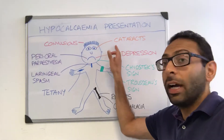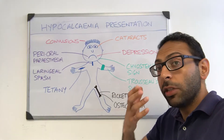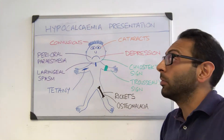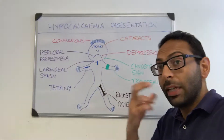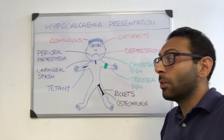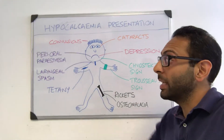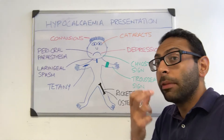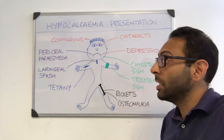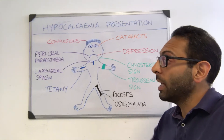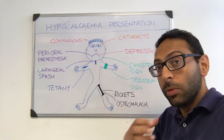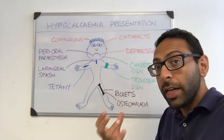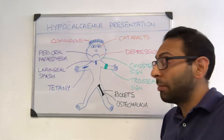First let's look at eyes — cataracts. You can get blurring of vision over time with low calcium levels. Convulsions can be a first presentation of a low calcium level. You may get tingling around the mouth, perioral paresthesia, that might be the first time they come and see you about that. You can get laryngeal spasm, which can lead to problems with breathing or things like stridor — again, that could be a presentation.